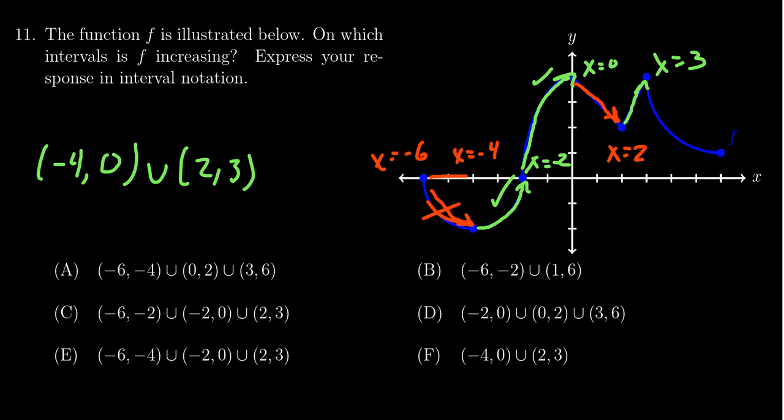And then you'll notice that for the rest of the graph, as we go from 3 to 6 over here, x equals 6, the function was in fact decreasing again. So we're not going to worry about that one.